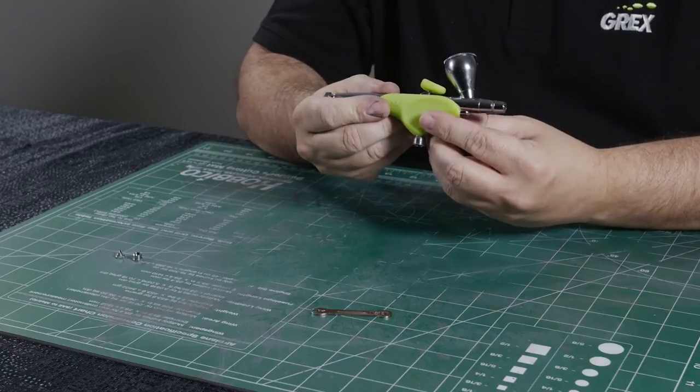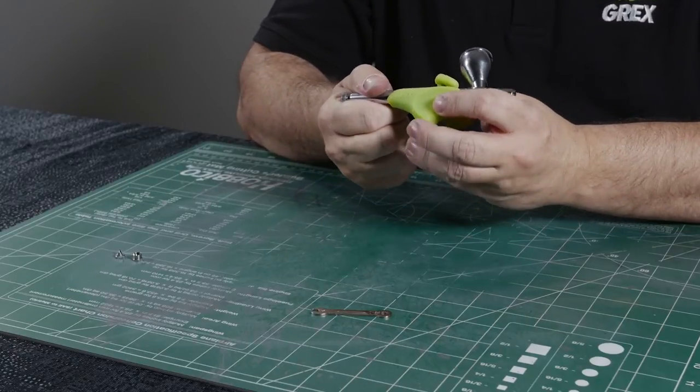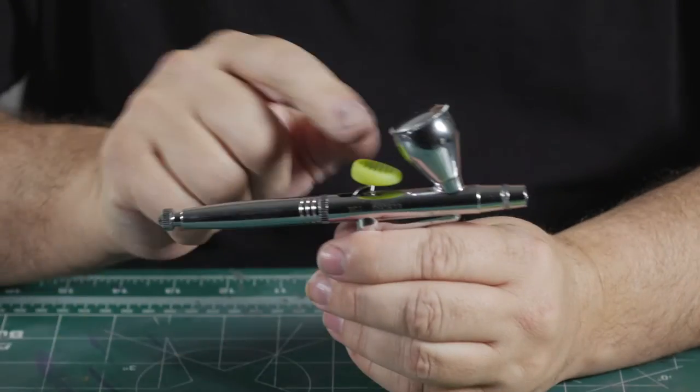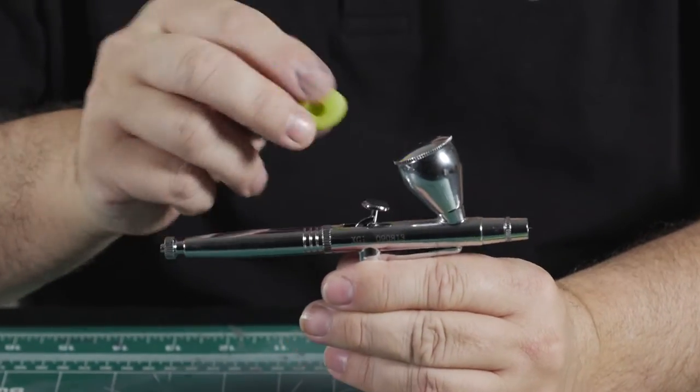Now we also have this rubberized grip and this just very easily slides right off of the airbrush. We'll also take the rubberized trigger pad off as well.